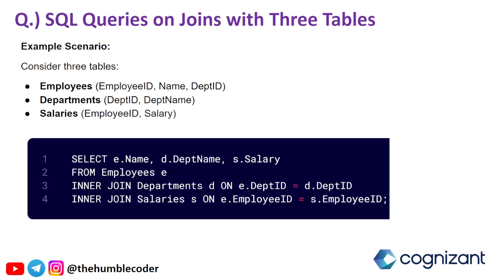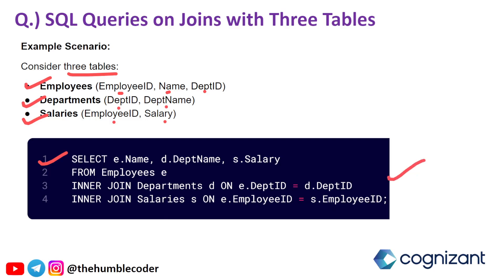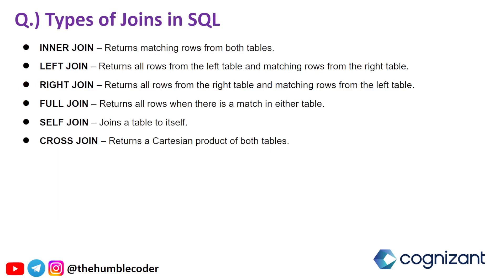The next question is SQL queries on joins with three tables. Consider three tables: employees (employee_id, name, dept_id), departments (department_id, department_name), and salaries (employee_id, salary). The query would be: SELECT e.name, d.department_name, s.salary FROM employees e INNER JOIN departments d ON e.department_id = d.department_id INNER JOIN salaries s ON e.employee_id = s.employee_id. If you have any doubts you can ask in the comment section. I have included answers alongside the questions so you don't have to search for them elsewhere.